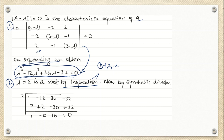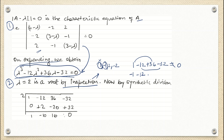First we try substituting lambda as 1: it becomes 1 minus 12 plus 36 minus 32, which is not zero — so 1 is not a root. We try minus 1: it gives minus 1 plus 1 minus 12, so minus 12, then minus 36 minus 32 — this is also not zero. So minus 1 is also not a root of this equation.